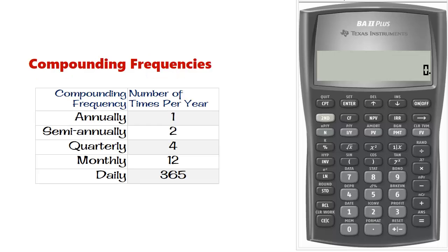We know that interest rates could be compounded annually, semi-annually, quarterly, monthly, or even daily. The purpose of this video is to show how to convert among these different compounding frequencies using the BA2 Plus calculator.